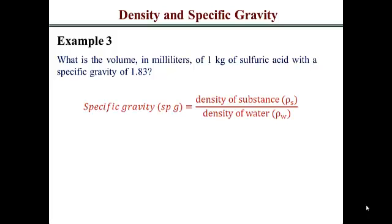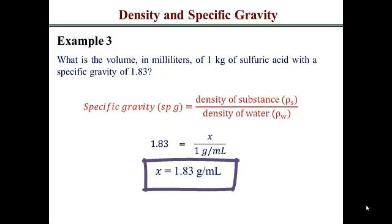So we can start off by using the specific gravity equation. And that we are doing because it allows us to determine the density of the substance. The density of water is always, always, always one gram per milliliter. So if we do the substitution, we end up having the density of the substance being 1.83 grams per ml.